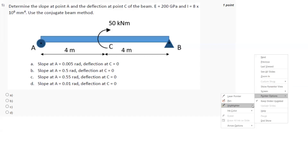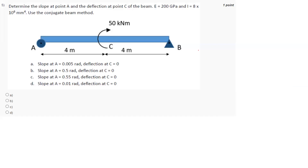First we will directly go with the EI value. EI is equal to 200 × 10³ into 8 × 10⁻⁶, multiplied by 10⁻⁹ to convert into kilonewton meter squared, and it becomes 1600 kilonewton meter squared.